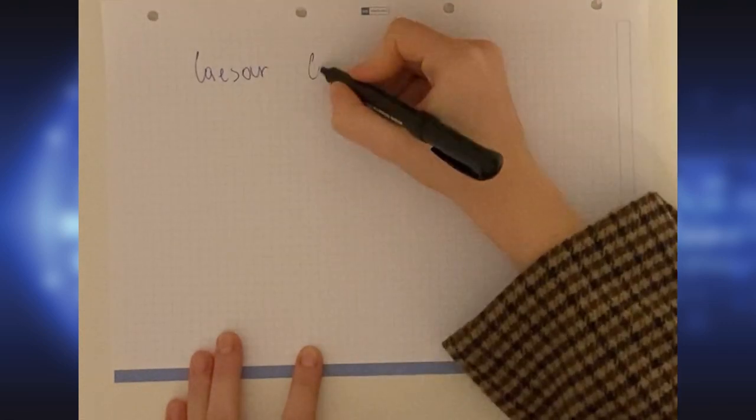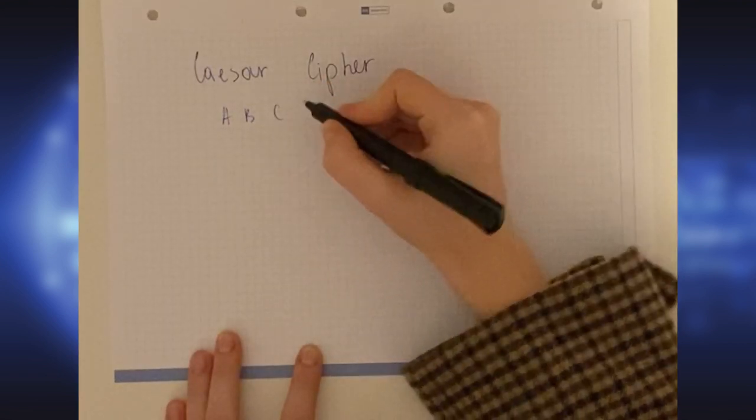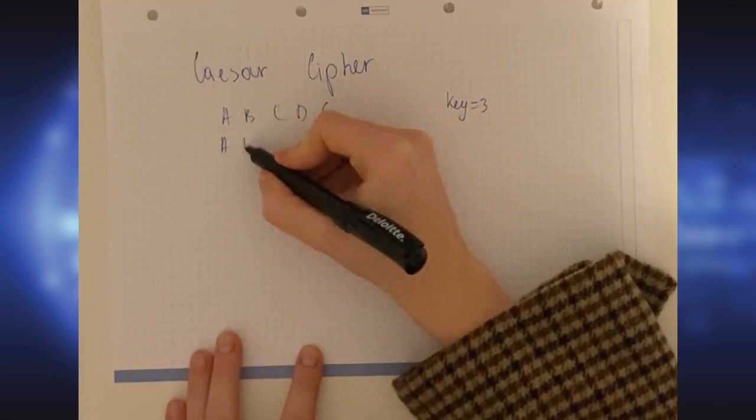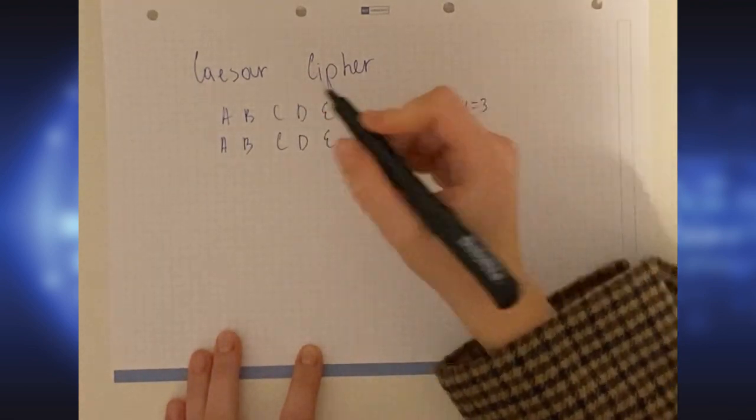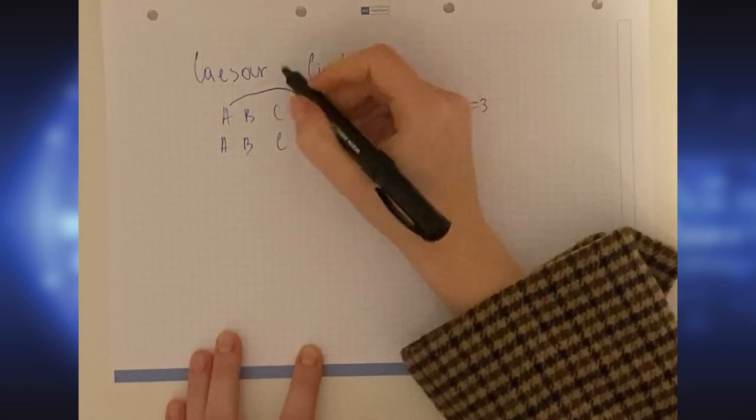Cryptography is the art of decoding messages, for example, the Caesar cipher. Let's look at an example. We write the first five letters of the alphabet and use the key three. To encrypt, we use plus three, so A goes to D. To decipher, D goes to A using the same key.